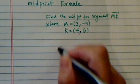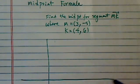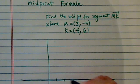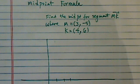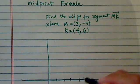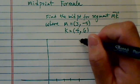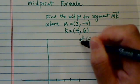So let's draw a picture here and quickly figure out what's going on. A picture is worth a thousand words. So 3 and minus 5 — I have one point here that's M. Let's write it out: M is (3, -5). The other one is K at (4, 6). So this is point K.